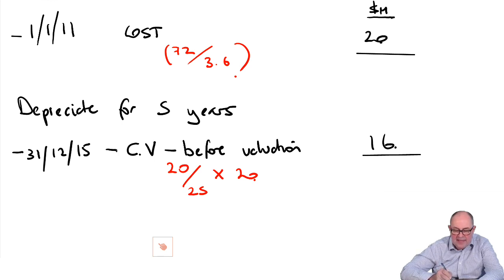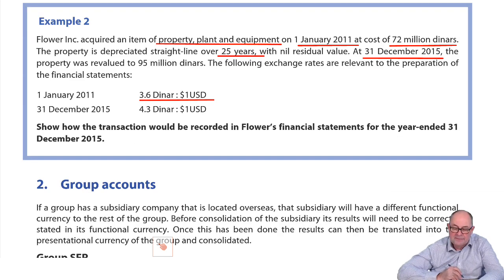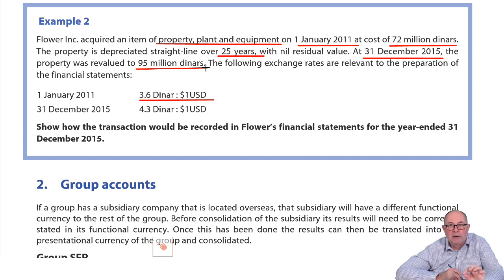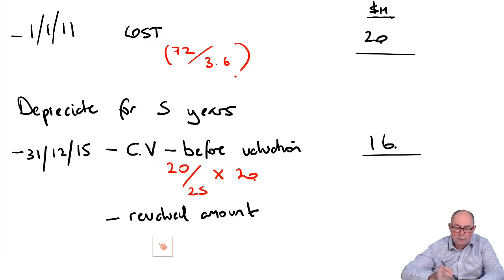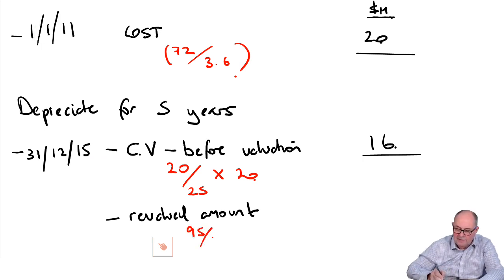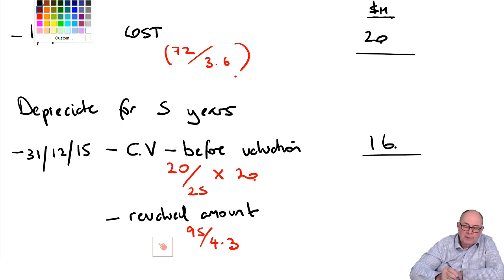On the same day, there is a valuation. So the revalued amount, we're told, in the local currency is 95 million dinars. Because we are measuring to fair value, that must be measured at the exchange rate on that date, December 2015. So 95 million divided by 4.3, rounding to one decimal place, gives us 22.1 million dollars.